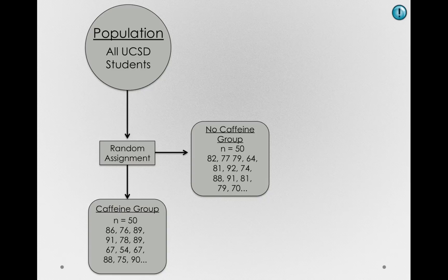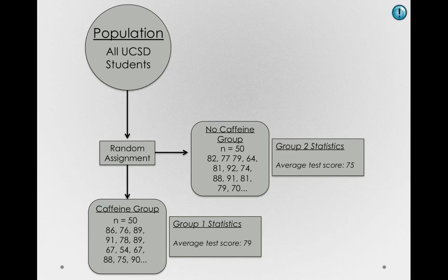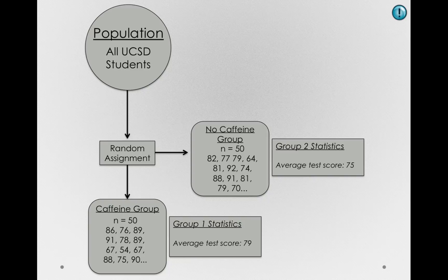Now, I showed you before that the average for group 1 was 79, and the average for group 2, the one that didn't get caffeine, was 75. Now, this difference between these two might be due to the caffeine or it might be due to sampling error. Notice we have two explanations of the difference that we need to deal with.